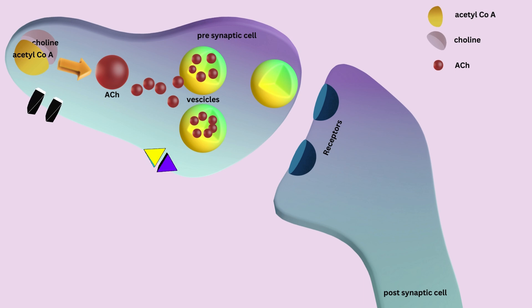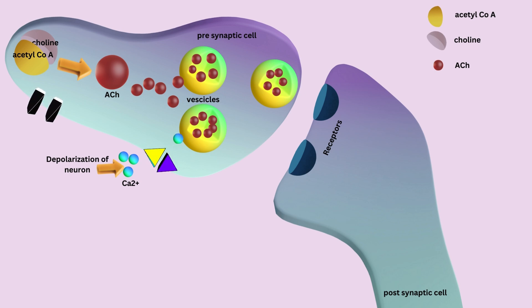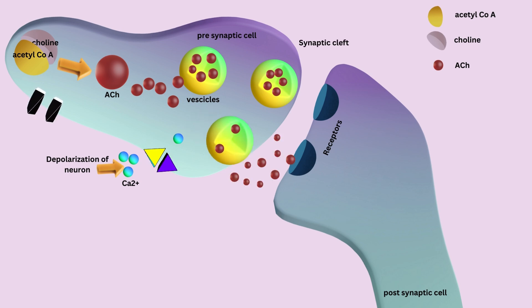Impulse-generated depolarization releases calcium influx. The modulation of this calcium influx appears as the main mechanism through which acetylcholine release is regulated, stimulating the vesicles to break down and release acetylcholine into the synaptic cleft.